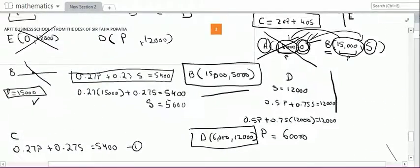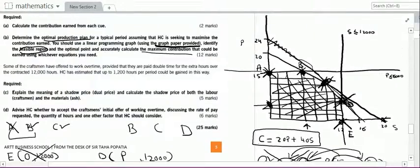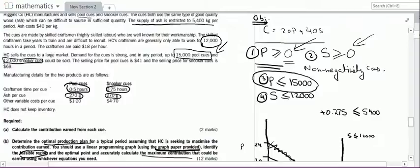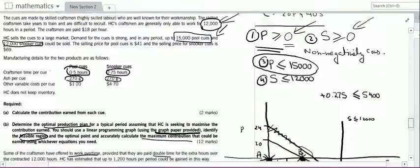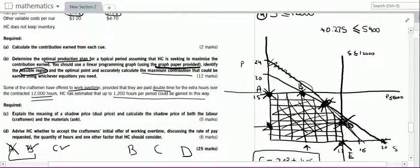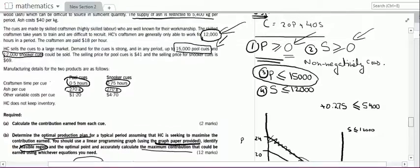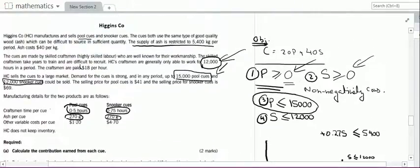Part C is now important. It states that some craftsmen have offered to work overtime, provided they are paid double time for extra hours over the contracted 12,000 hours. H has estimated that up to 1,200 hours per period could be gained this way. The craftsmen's condition is that they should receive double their current pay.